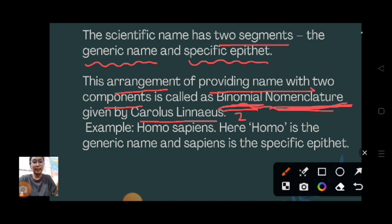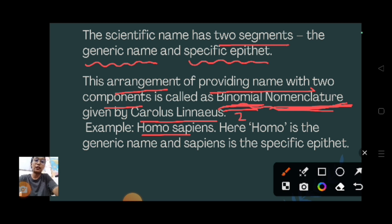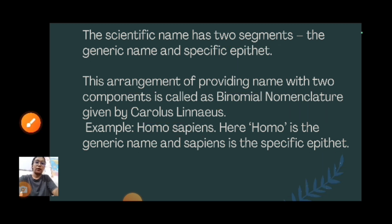On the last slide we saw the example of mango, Mangifera indica. Now we will see a different example: Homo sapiens, which is the scientific name of human beings. Here, Homo is the generic name and sapiens is the specific epithet.